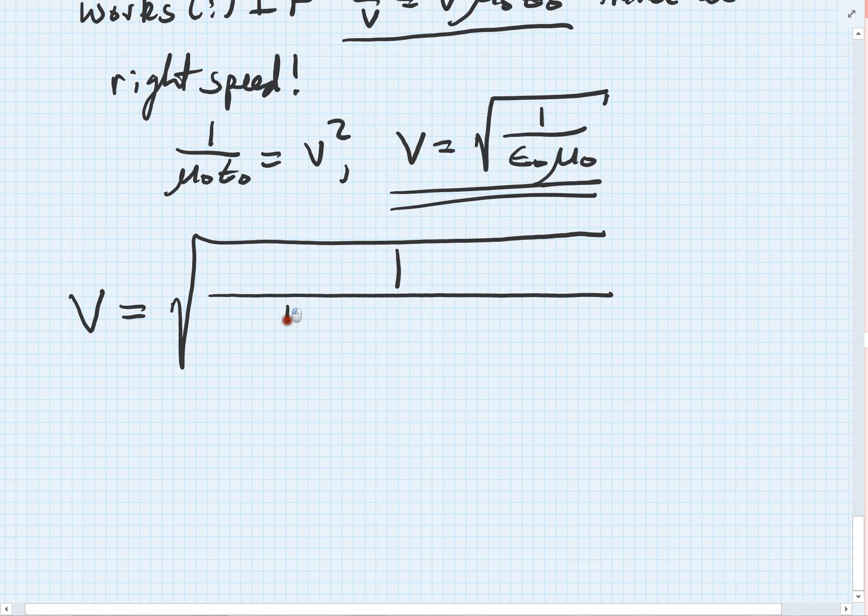Epsilon naught, as you know, is 1 over 4 pi times Coulomb's constant. And Coulomb's constant is 9 times 10 to the ninth. And it gives us a force between two charges, so it's going to be Newton meters squared per Coulomb squared.